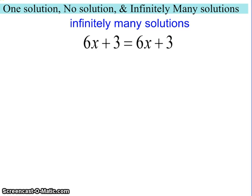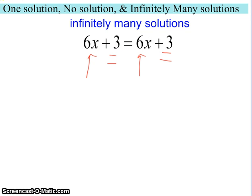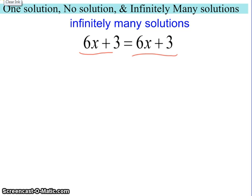Let's look at infinitely many solutions. Let's start by looking at some structure to see if we can find some clues. One of the things I notice is that we've got 6x's and 6x's — we have the same number of variables on both sides. We also have the same constants. It turns out that this expression is the exact same as the expression on the other side.